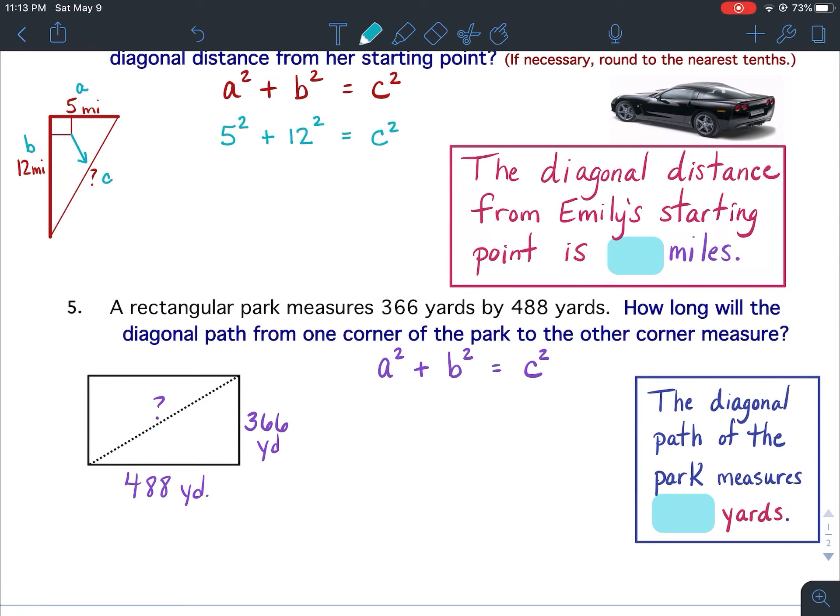This is exactly like example seven in the notes. So I already have the rectangular park on the paper for you and the diagonal path is the dotted line.